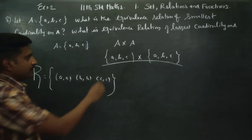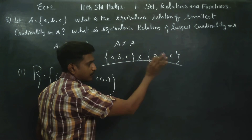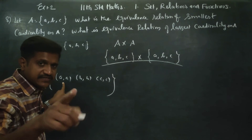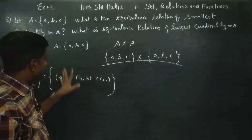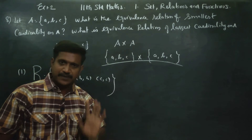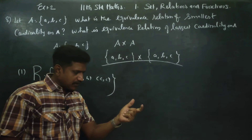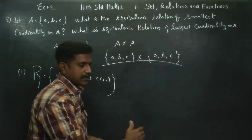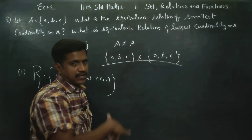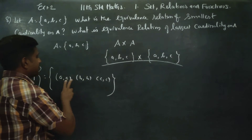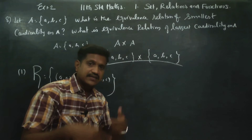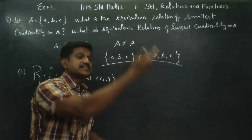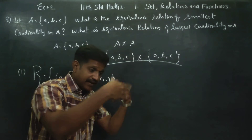We have pairs (A,A), (B,B), (C,C) — same-same elements. This relation is symmetric. First line is correct, second line check: A related to B, B related to A — check. A related to C, C related to A — check. Two different letters are symmetric with each other; same letters are also correct. Symmetric is correct. First line is correct, second line is correct.